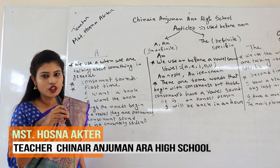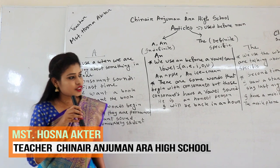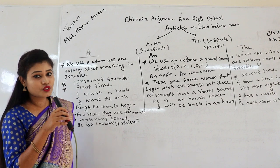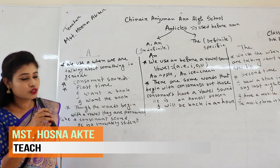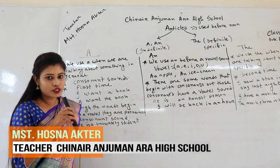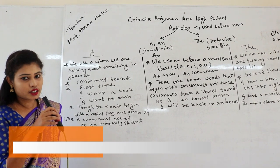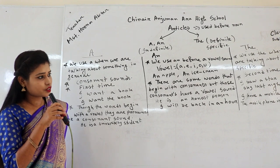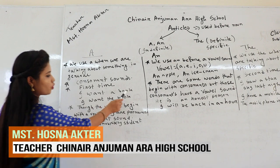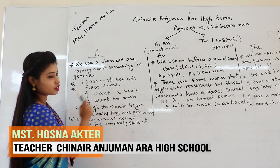Let's start our main discussion. Today I would like to discuss about articles, which is very simple and easy to understand. The articles are 'a', 'an', and 'the'. Articles are used before nouns or noun-equivalent words. Do you know which part of speech an article is? Articles are adjectives — articles function as adjectives. For example, 'I want a book' — here 'book' is your noun and 'a' is your article.